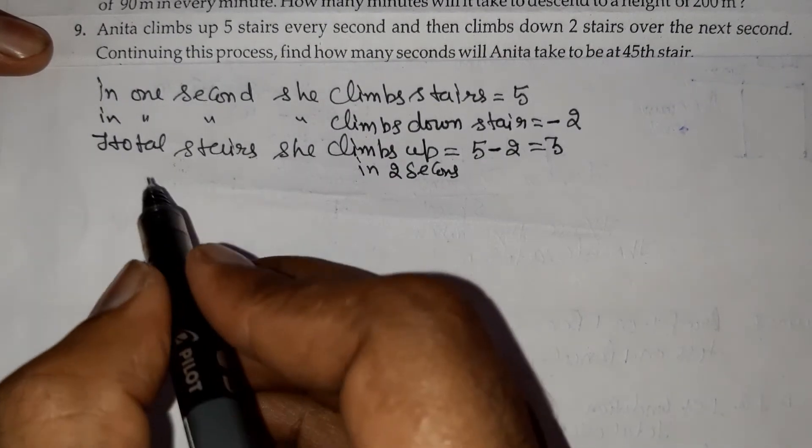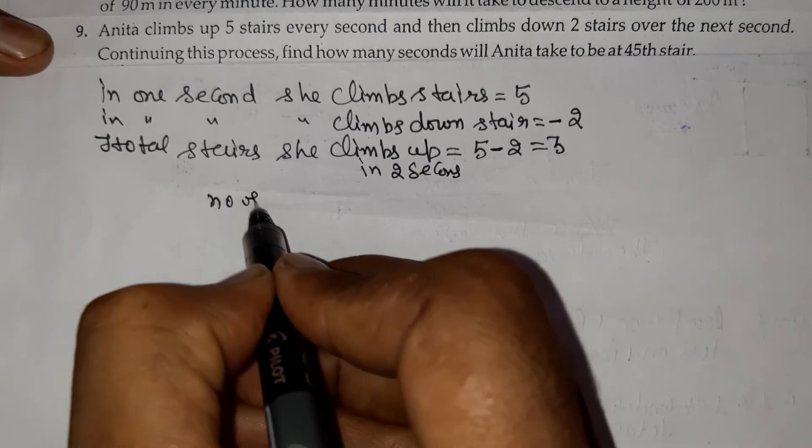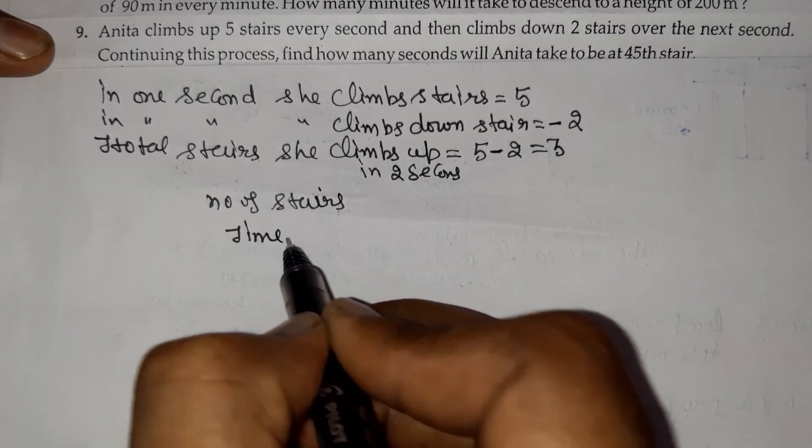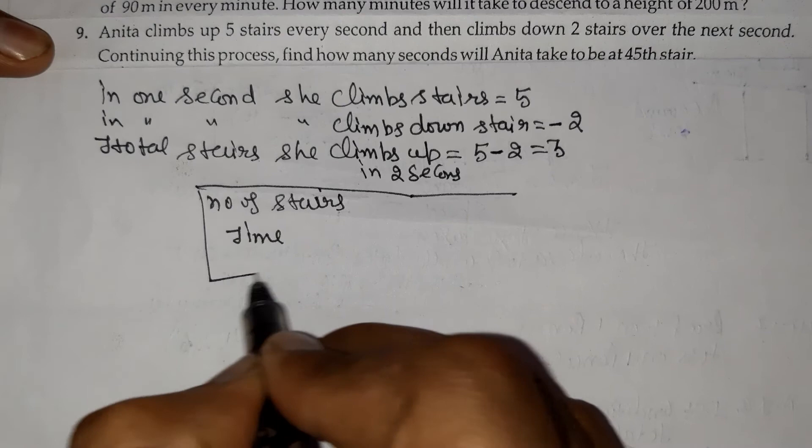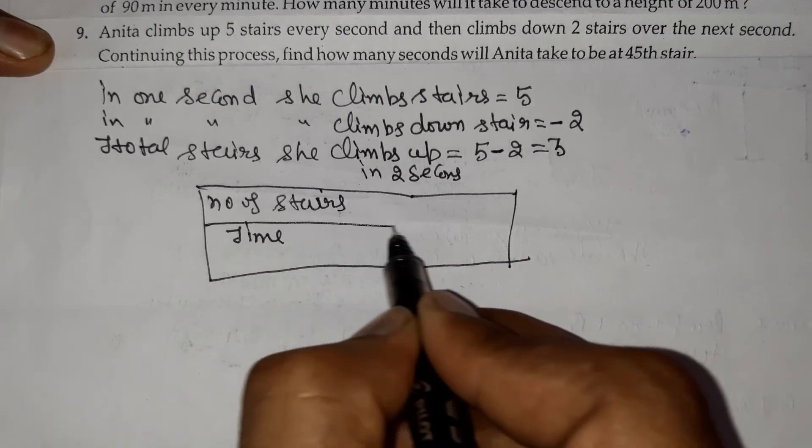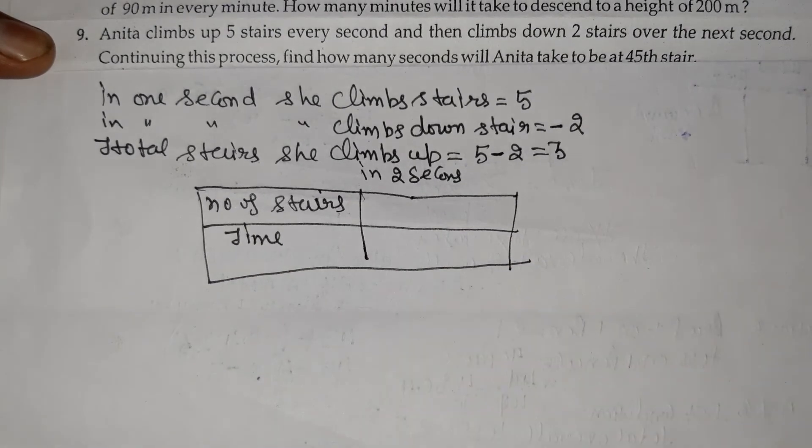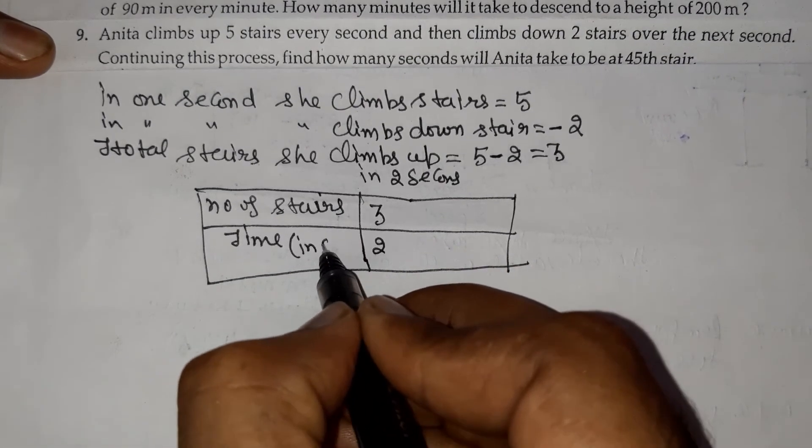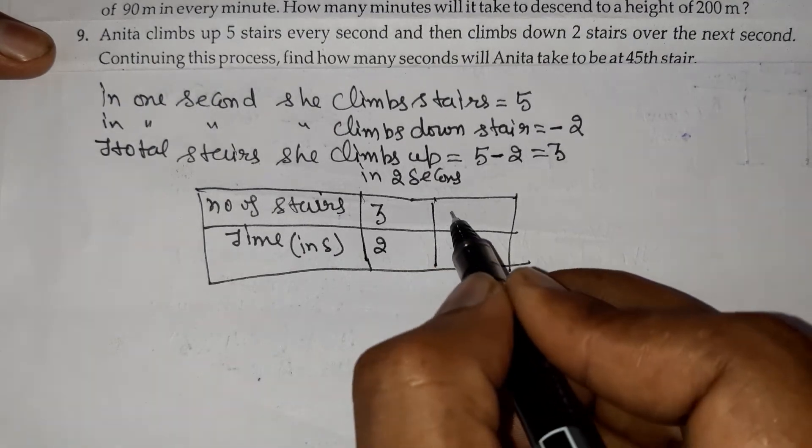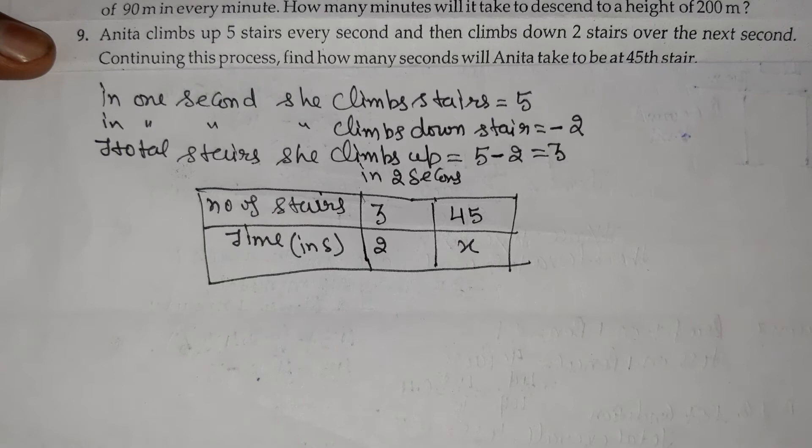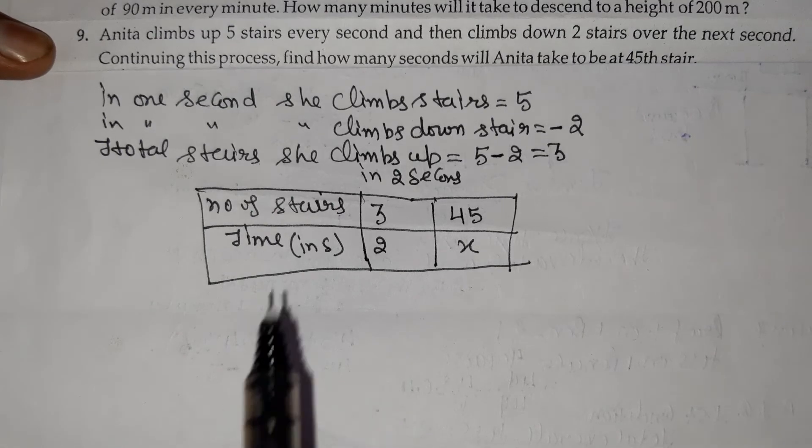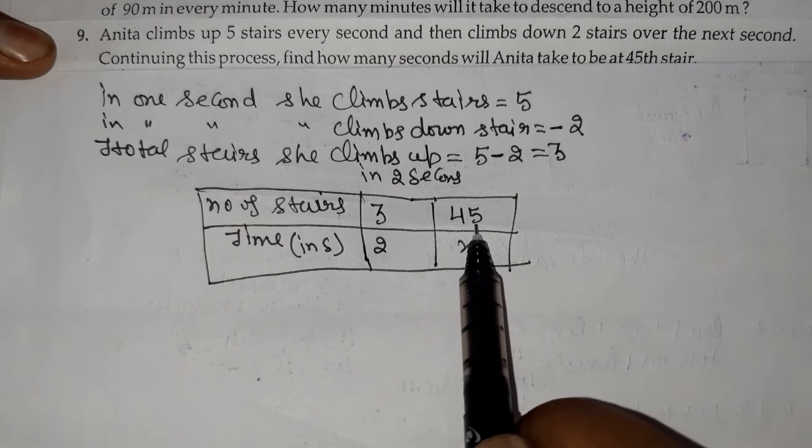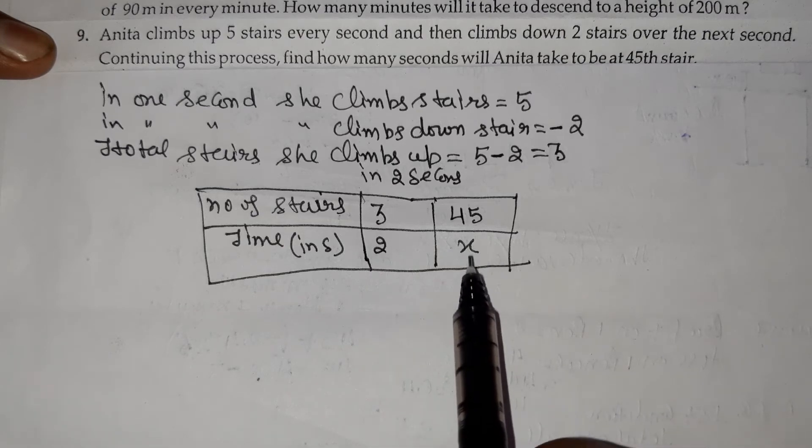Now let's make a table: number of stairs and time in seconds. We have 3 stairs covered in 2 seconds, and we're asked how many seconds to cover 45 stairs.